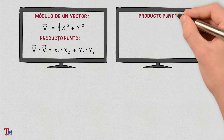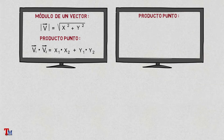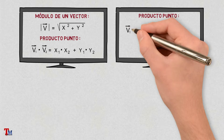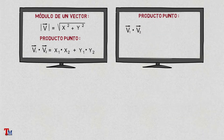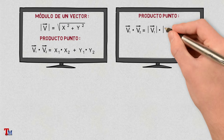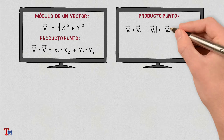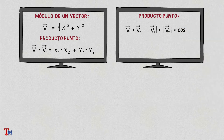Also the dot product from the polar coordinates, which is defined as the multiplication of the modules of both vectors by the cosine of the angle between them. In this video we will not explain it either, but if you have any doubts I will leave you the link in the description where we explain how to calculate the dot product between two vectors.